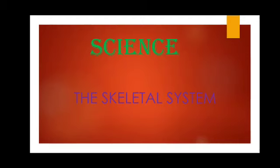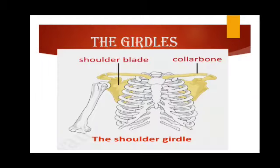Today's class we will start with the girdles. First we will move on to the shoulder girdle. The shoulder girdle is made up of the collarbone and shoulder blade. As you can see in the diagram displayed on your screen, this shoulder girdle has two main parts: the shoulder blade and the collarbone. Its main function is that it connects the arm to the rest of the body.